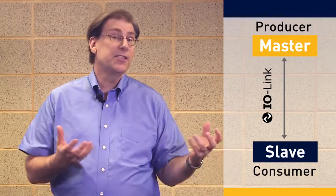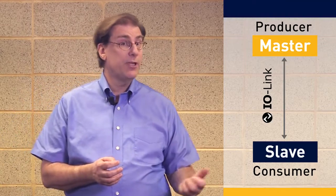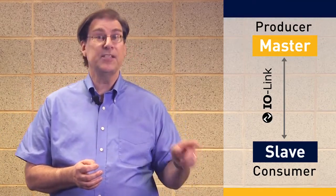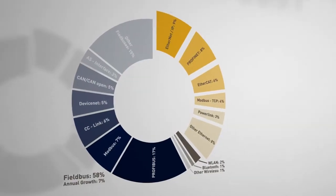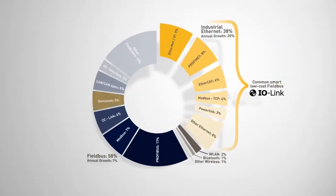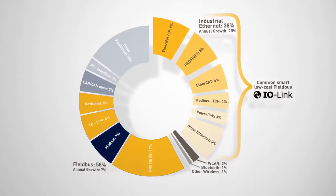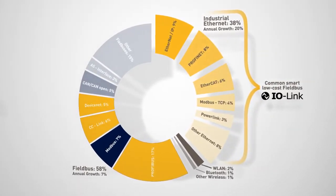Again, a point to point master I/O slave is going to be IO-Link. It has a slave and a master or a producer and consumer, and it's a single point connection. So it doesn't have any tree topology, ring topology, or daisy chaining. We've started to see a big shift now towards ethernet type networks. And the reason why is the cost came down.